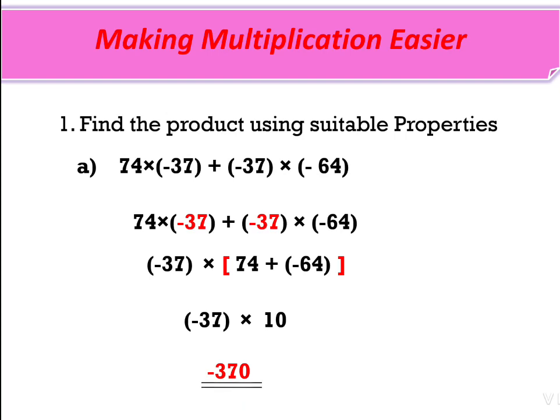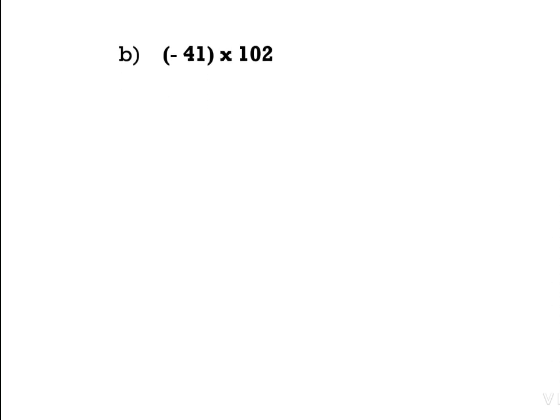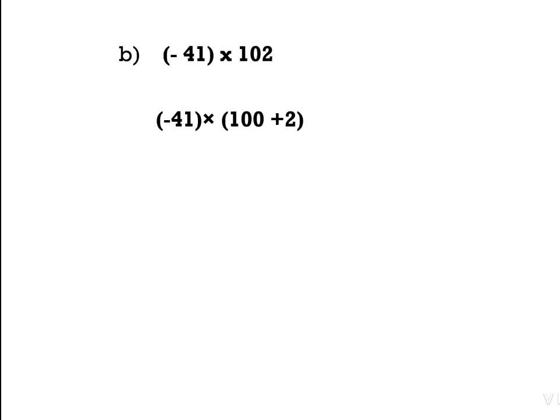Second question, B: −41 × 102. Here also we can use one property. 102 can be written as 100 + 2. We use this because we can apply a property here. So we write: −41 × (100 + 2). Then A × (B + C) = A × B + A × C, so we write: −41 × 100 + (−41) × 2.